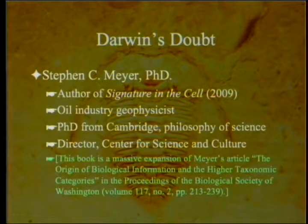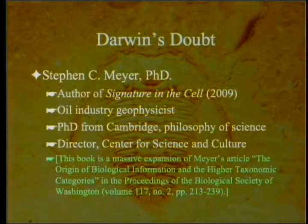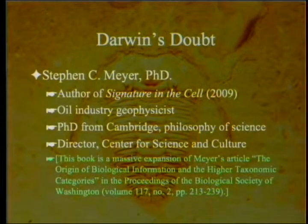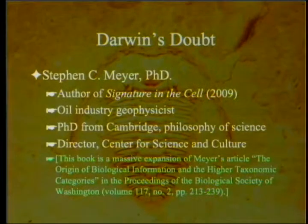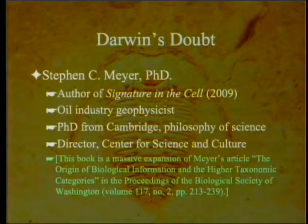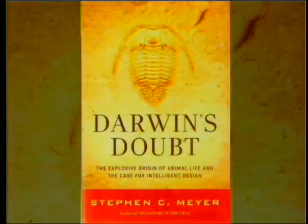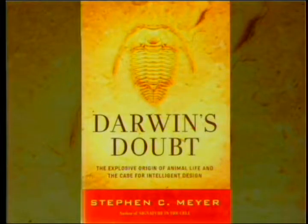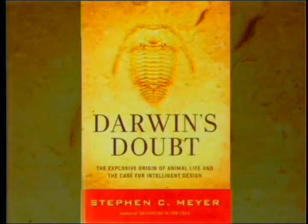The book is actually a massive expansion of Meyer's article 'The Origin of Biological Information in Higher Taxonomic Categories' in the Proceedings of the Biological Society of Washington. This is the article that got Richard Sternberg in all the trouble he got into, and it was retracted — it does not officially exist, even though of course it does. That's how you deal with things you can't argue with: you just make them go away.